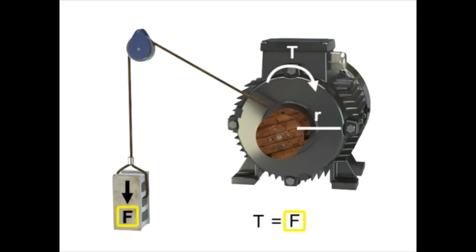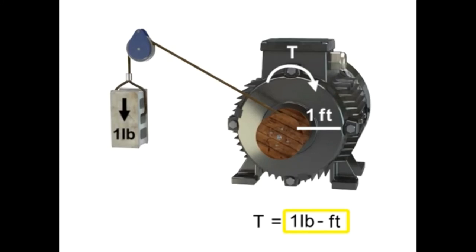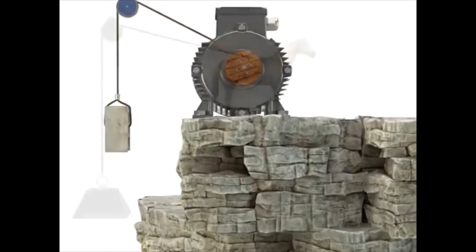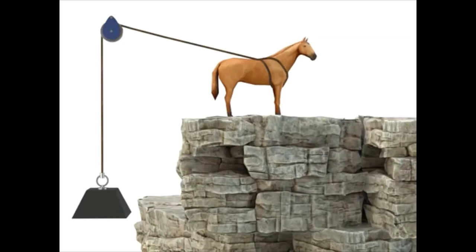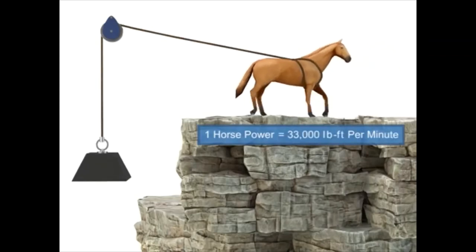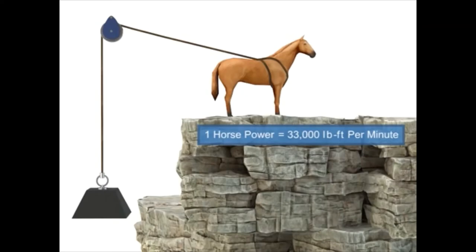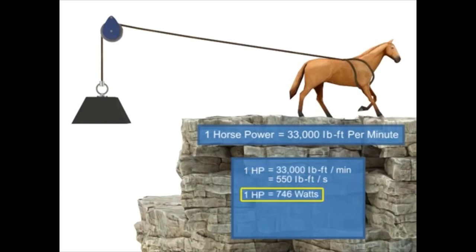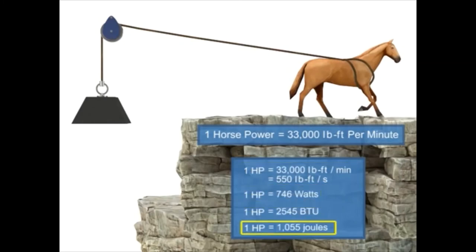Torque occurs when a force acts on a radius. Typical units of measurement for torque are pound-foot. The torque illustrated here is equal to one pound-foot. Horsepower is defined as the rate at which work is accomplished. Years ago, before motors were invented, most work was accomplished manually. It was estimated that one horse could accomplish approximately 33,000 pound-foot of work per minute, and thus the term horsepower was born. In modern terms, horsepower is simply another unit of measurement for power, and can be translated into watts, BTUs, joules, or any unit of power. Units that measure motor power are typically in horsepower or watts.